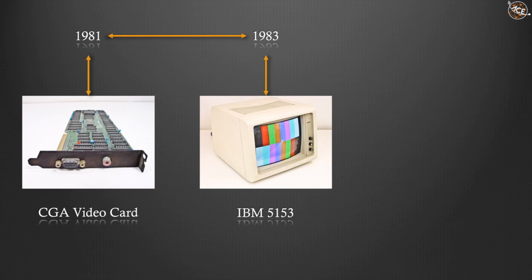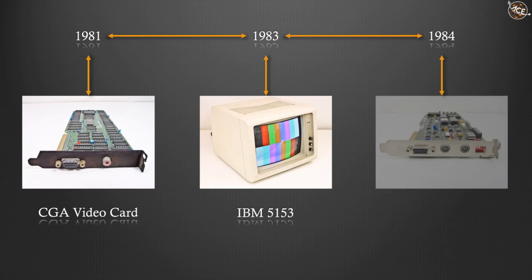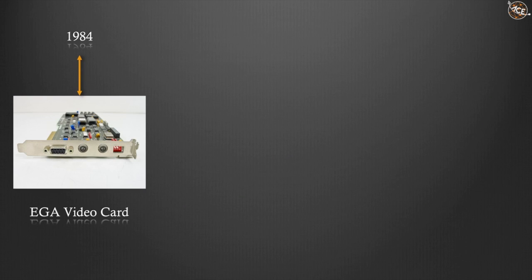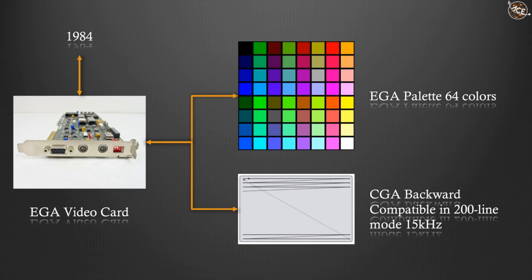Three years after CGA, in October 1984, IBM introduced the enhanced version of CGA, with an extended palette of 64 colors and more output capabilities. This enhanced version was called Enhanced Graphics Adapter, or EGA. The EGA wasn't fully backward compatible with CGA — only in a 200 line mode was the horizontal scan frequency of EGA the same as used in CGA.